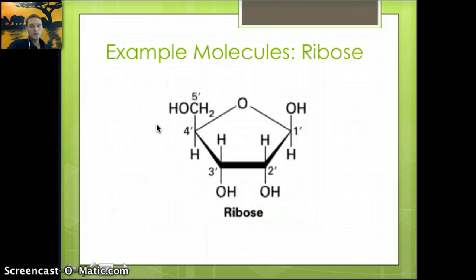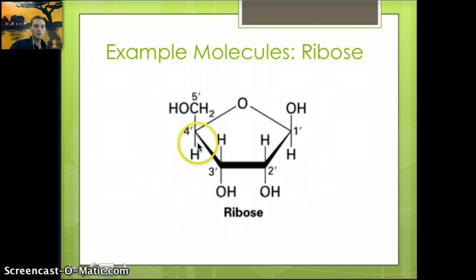The next molecule you'll need to draw is ribose, the sugar found in RNA. It's a five-carbon sugar—one, two, three, four, five carbons labeled here. It's very similar to glucose but missing a carbon. You'll be able to draw and recognize this as well.